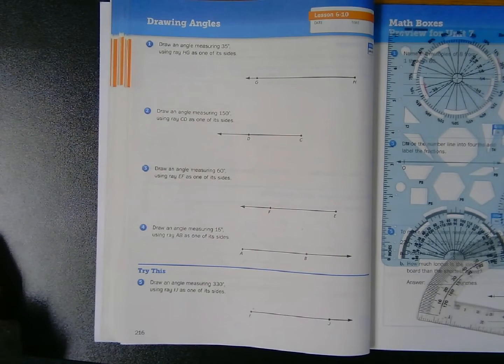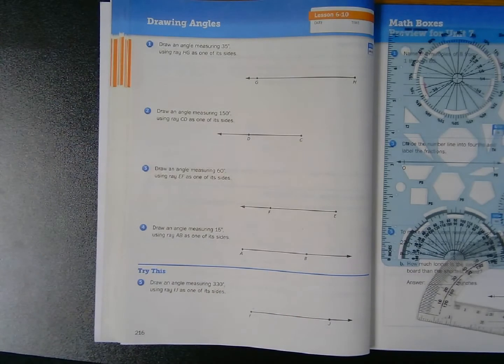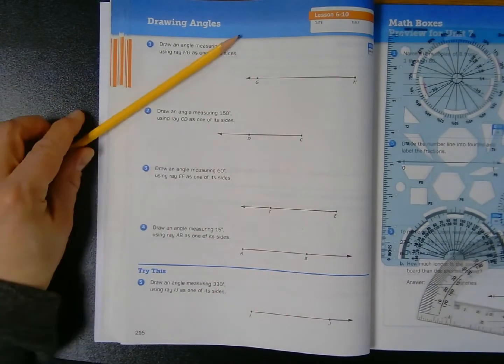As you can see here, I have a number of rays that are just dying for a mate. They need a second ray to connect to them to make them into angles.